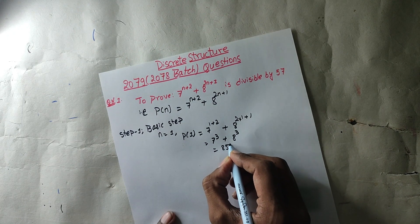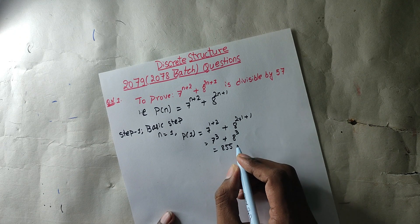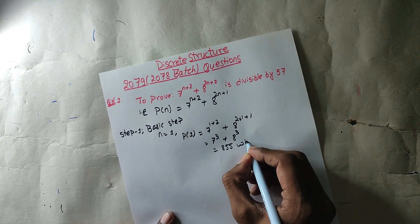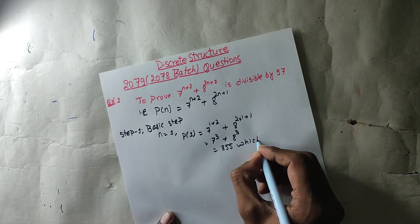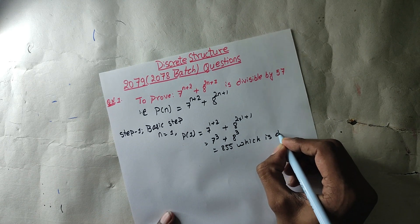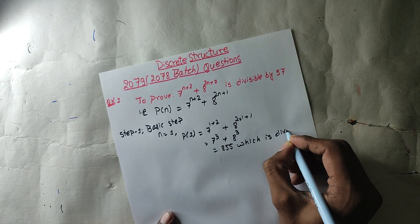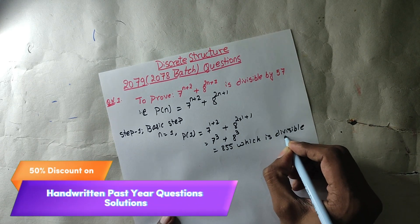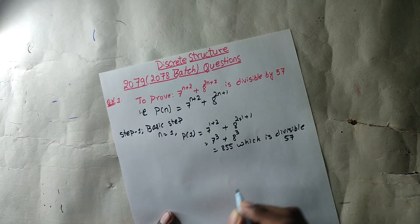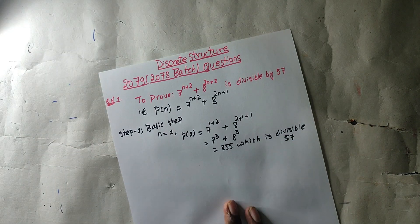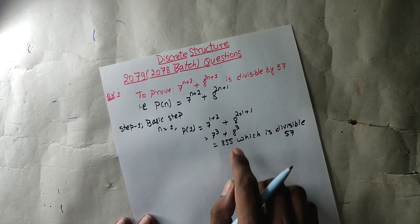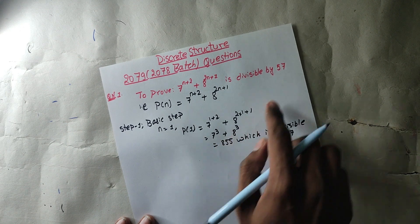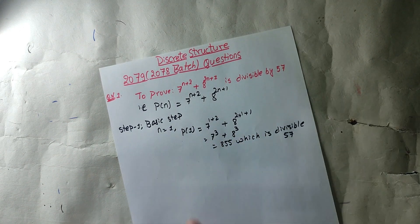So 7^1 plus 8^3 equals 7 plus 512, which gives us 519. We check: 519 divided by 57 — 8 times 57 is 456... Actually, 7 plus 8 equals 15... Let me recalculate: 7^1 + 8^3 = 7 + 512 = 519. This is divisible by 57, since 57 × 9 = 513... The result is divisible by 57. You can verify this.